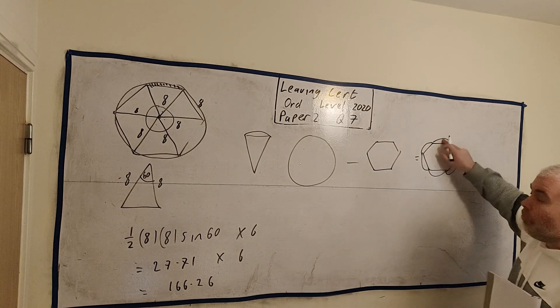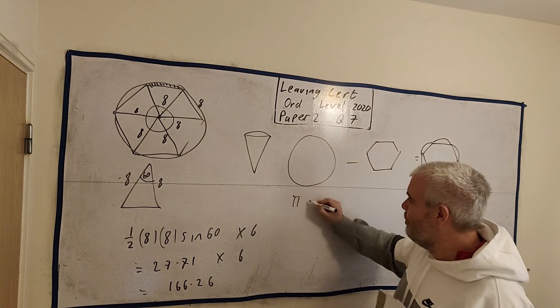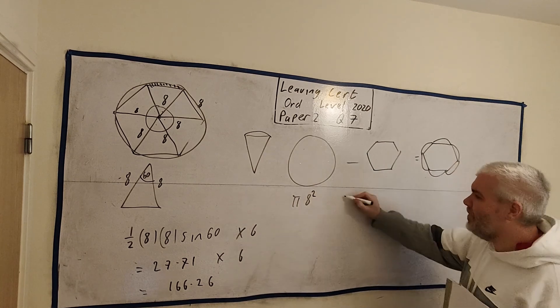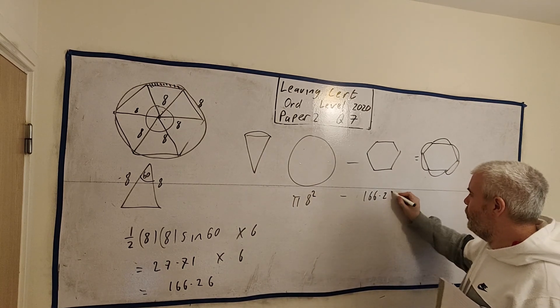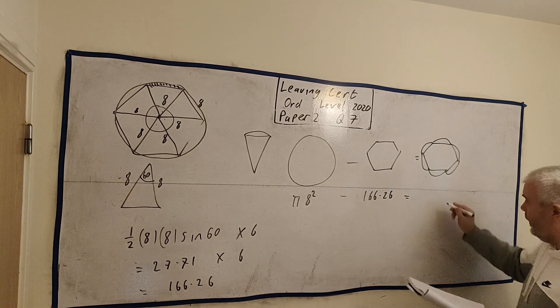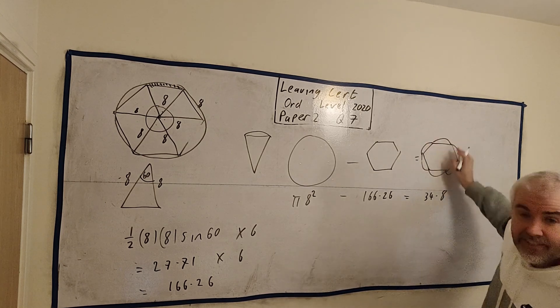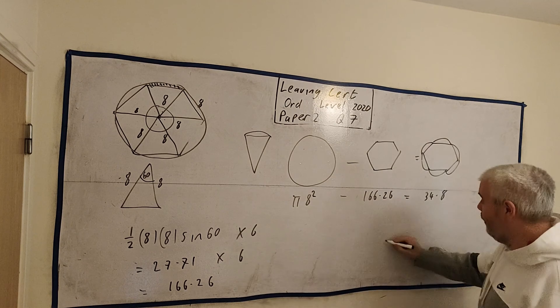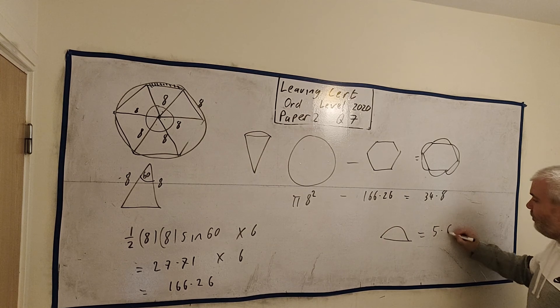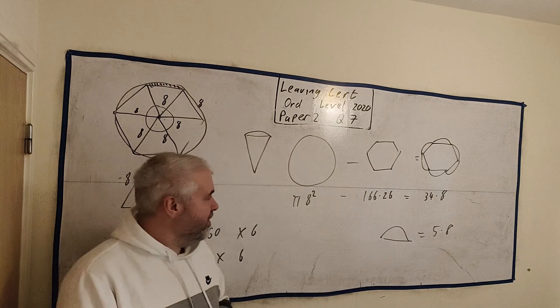So it's quite easy to find the area of this. It's pi r squared or eight squared. The area of this is 166.26. Take that away. And we are left with 34.8 is the area of six of those little bits. So the area of one little bit is equal to this divided by six, which is 5.8. I think that's all of those questions.